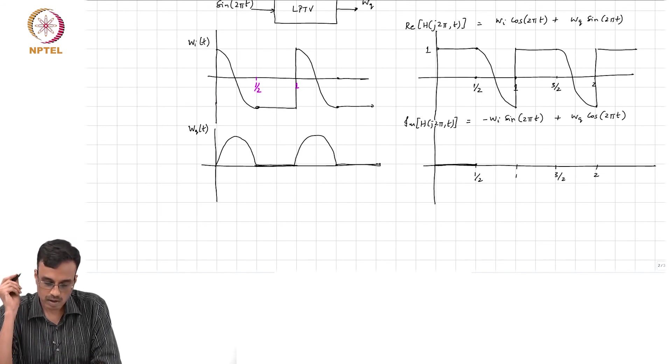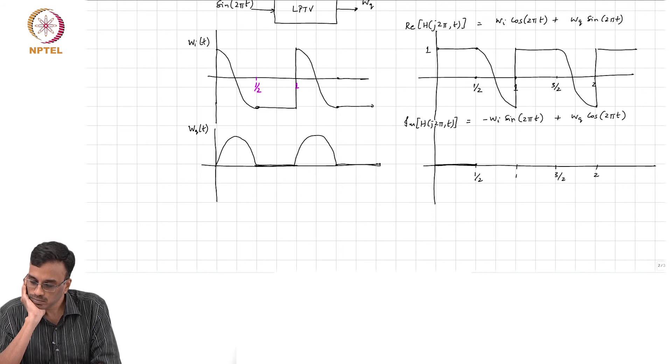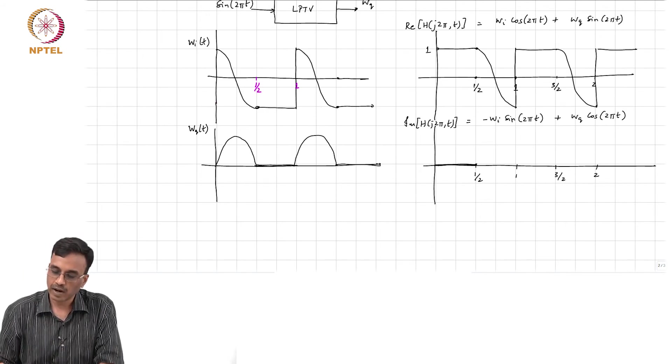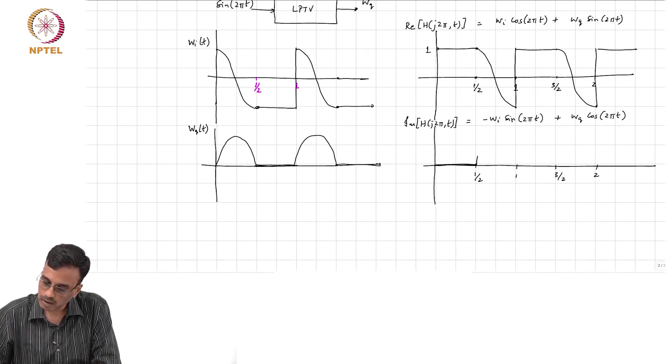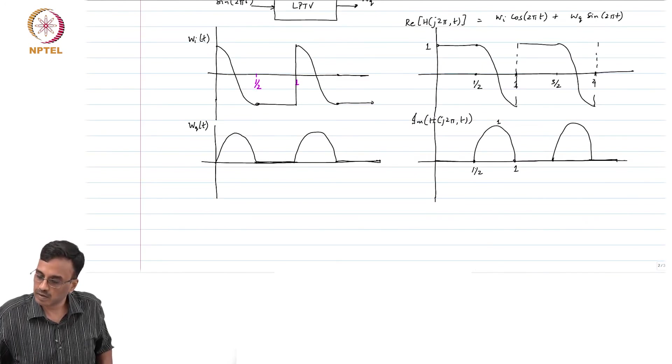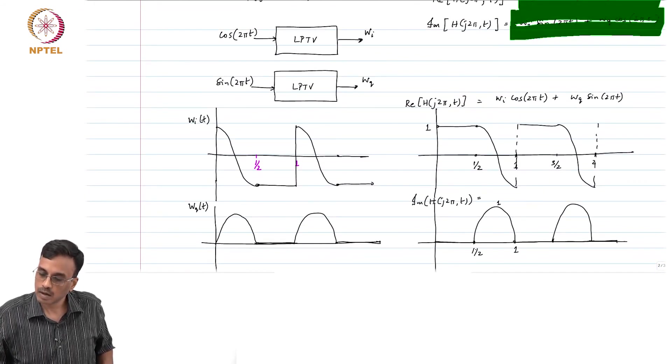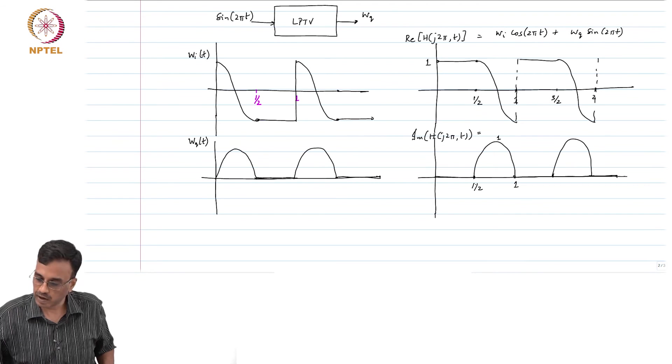Very good. In half to 1, it will be - wᵢ is minus 1 - it will be sine - it is the - sorry, this was minus wᵢ sin 2πt.